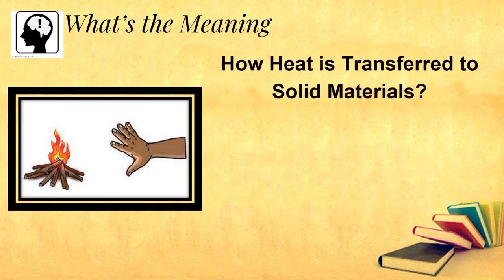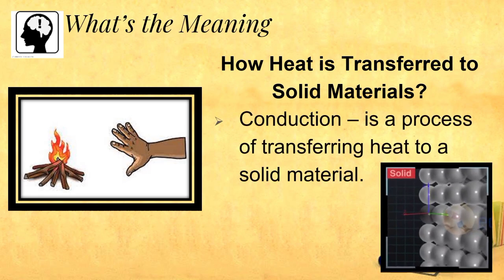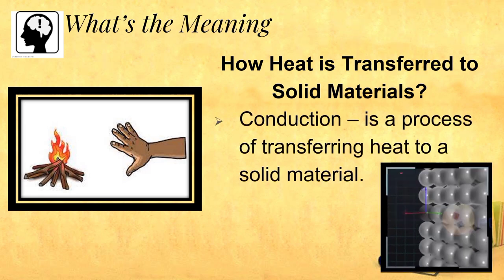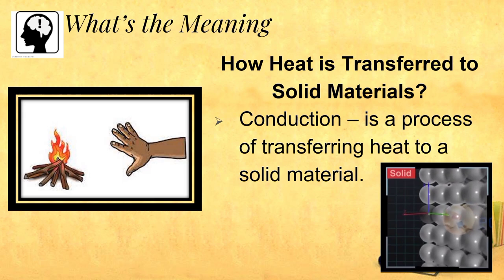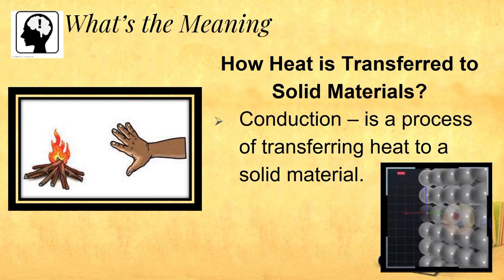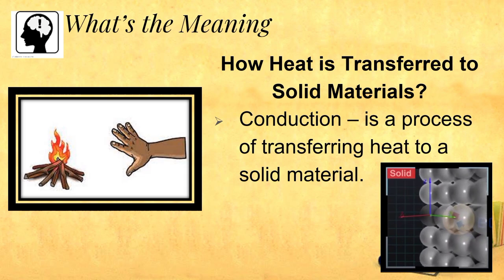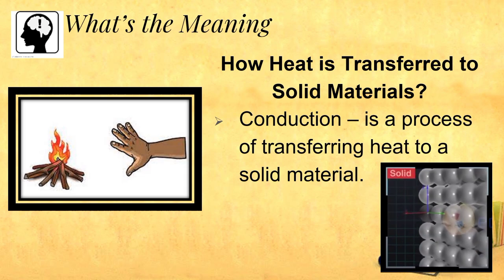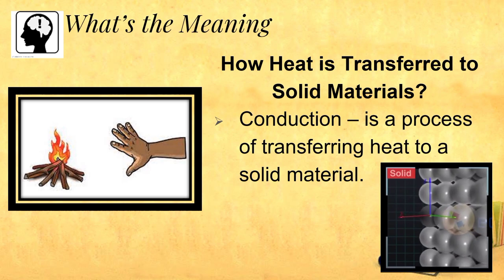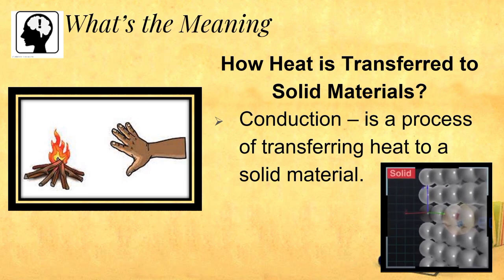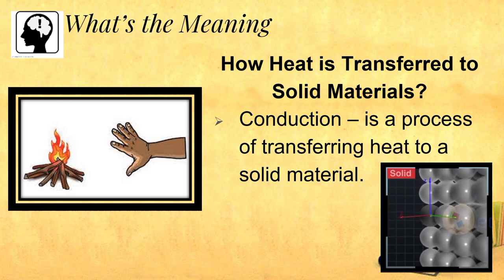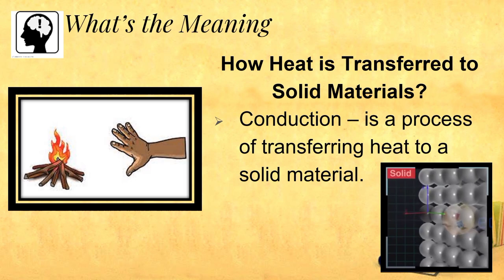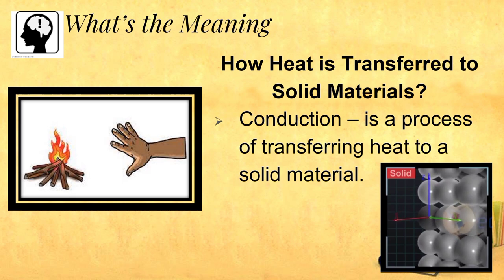How is heat transferred to solid materials? The transfer of heat in solid materials is called conduction. The heat makes the atoms at the bottom of the metal spoon vibrate faster. Conduction is the heat transferred through a substance or from one substance to another by direct contact. Everything is made up of small particles. When particles move faster, there is more energy and the temperature is higher. As fast-moving particles touch slow-moving particles, the energy is transferred, causing the slower particles to speed up and the faster particles to slow down.